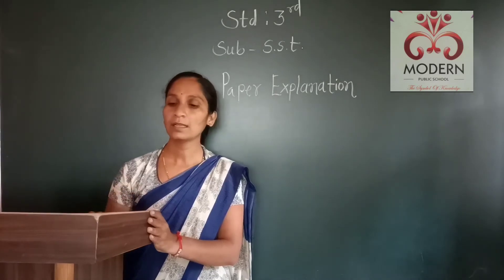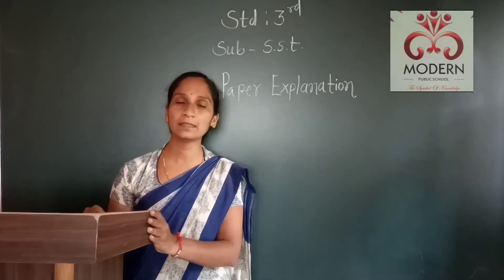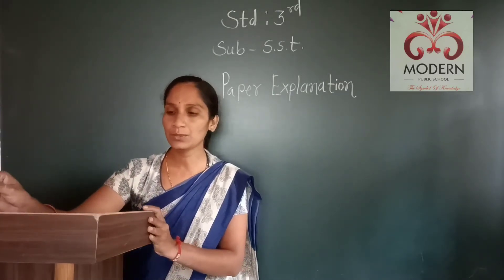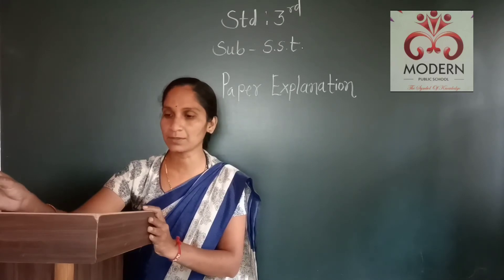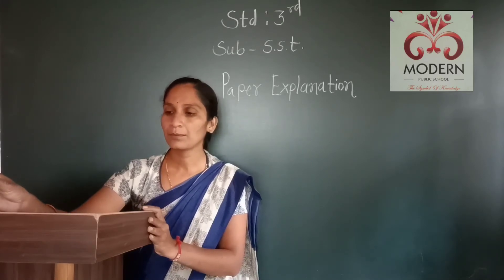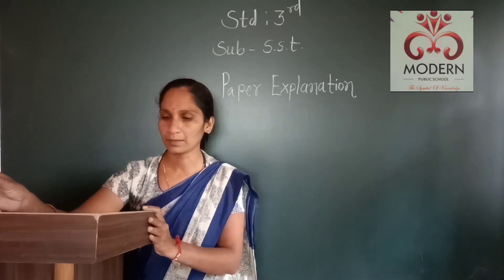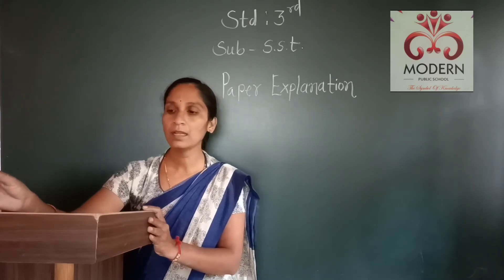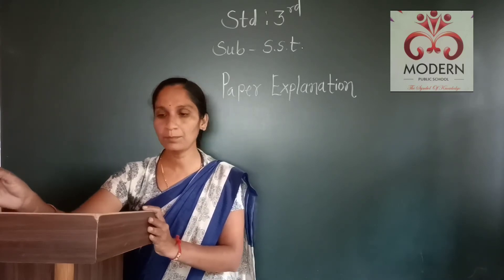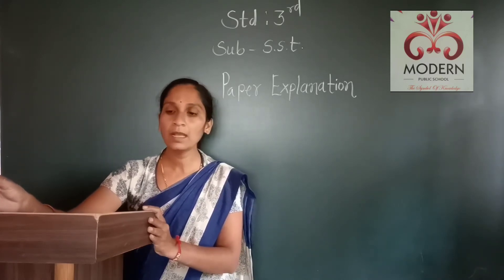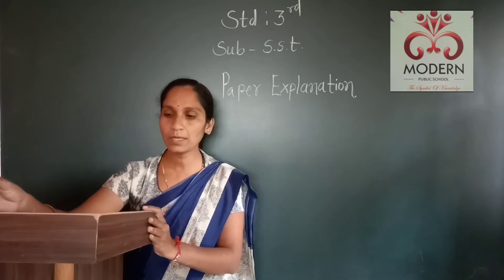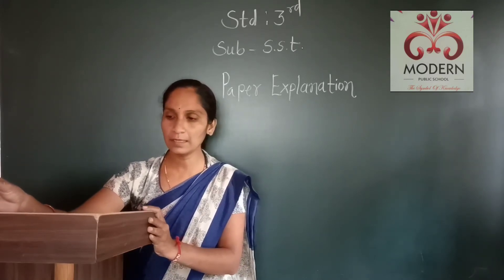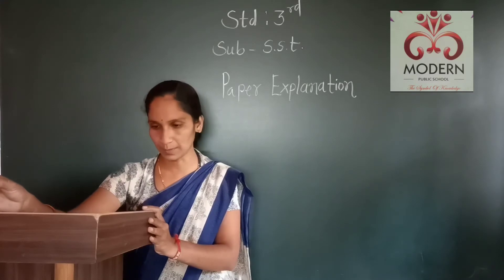Turn your page. Next question, ninth number: the first tools used by early human beings were made of — options: stone, metal, cardboard, paper. Tenth: Assam is the capital of — options: Sikkim, Delhi, Manipur, Mizoram.